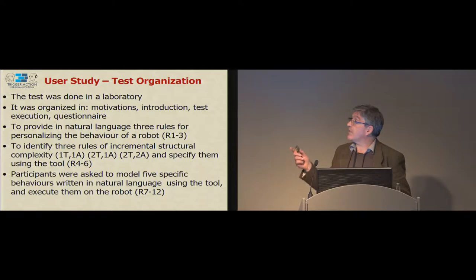The test was done in the laboratory, and it was organized in various parts. First, we asked them to indicate what rules would you like in general to specify to a similar robot. Then we asked them to specify rules with increasing complexity: one trigger, one action, two triggers, one action, two triggers, two actions. Then we gave them some natural language description of some rules and asked them, okay, please use the tool to specify such rules and execute them and see whether the resulting behavior is really what you expected.